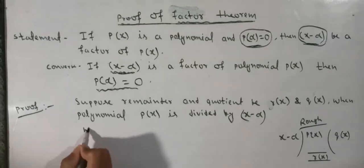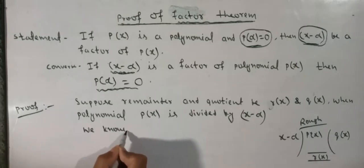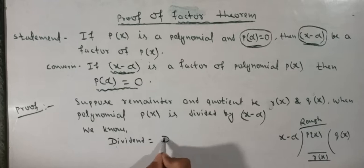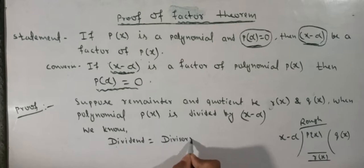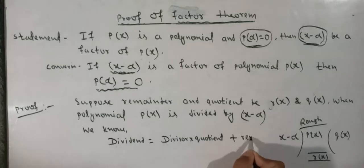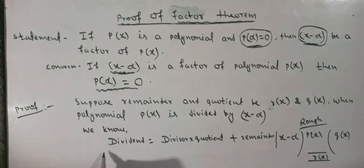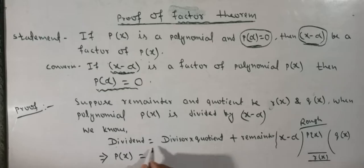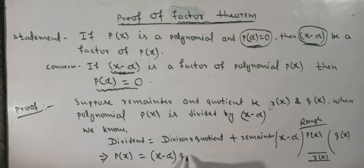We know: dividend equals divisor into quotient plus remainder. So our dividend is px. Therefore px equals divisor (x minus alpha) into quotient qx, plus remainder rx.